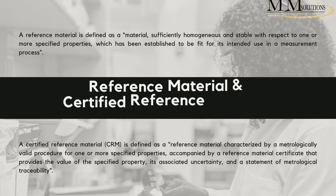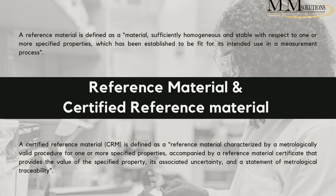First let's recap on the definitions of a reference material relative to a certified reference material. A reference material is defined as a material sufficiently homogeneous and stable with respect to one or more specified properties, which has been established to be fit for its intended use in the measurement process. A certified reference material, a CRM, is defined as a reference material characterized by a metrologically valid procedure for one or more specified properties, accompanied by a reference material certificate that provides the value of the specified property, its associated uncertainty, and a statement of metrological traceability.